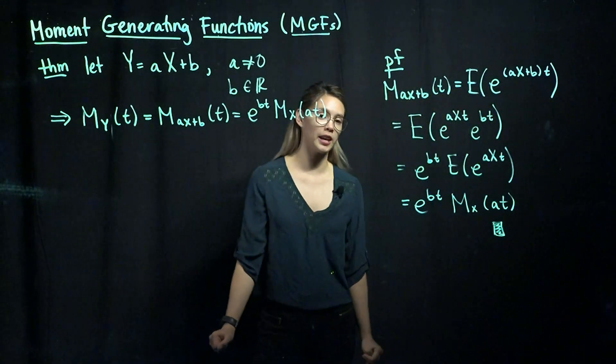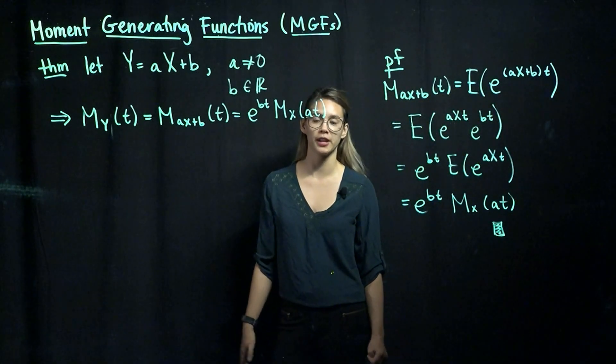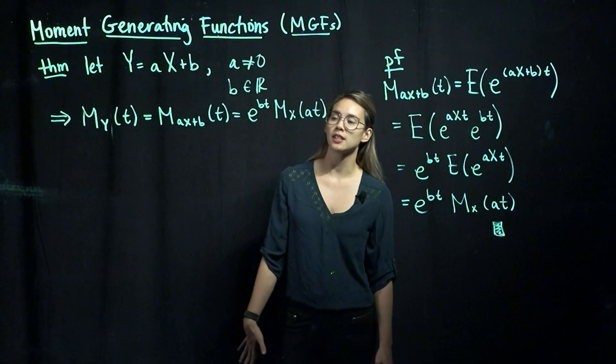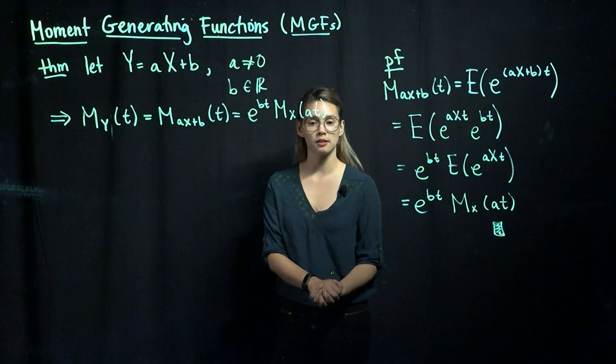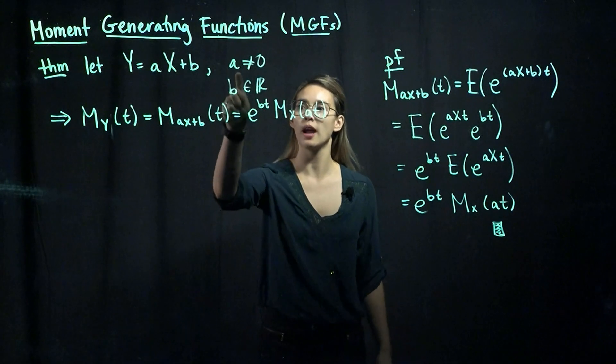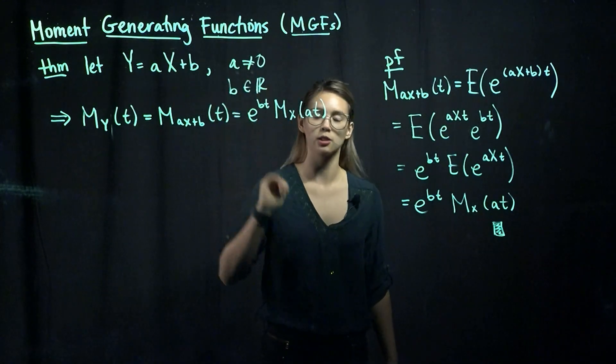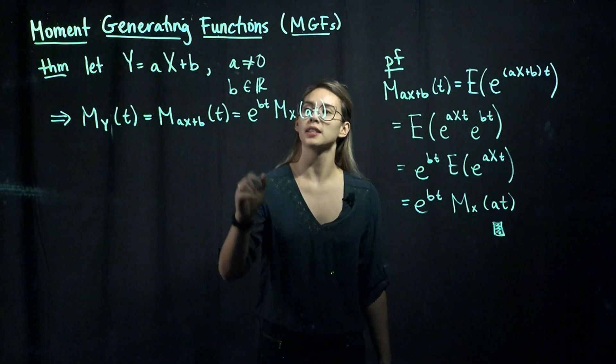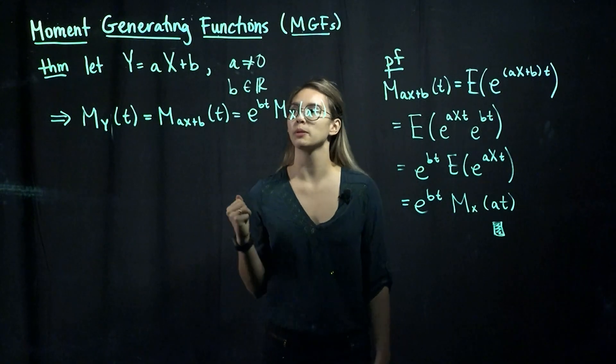In this video, we're going to look at a linear transformation of a random variable. So let's think about some random variable x, and then let's choose some value a that's not equal to 0, otherwise this will be a very boring problem.